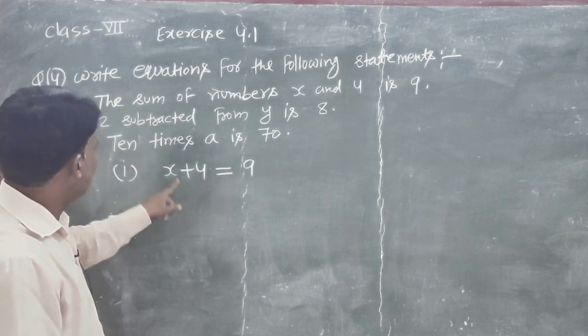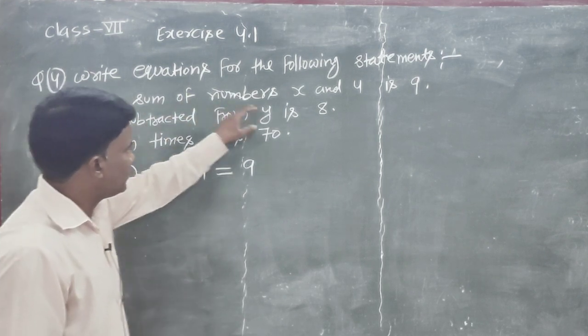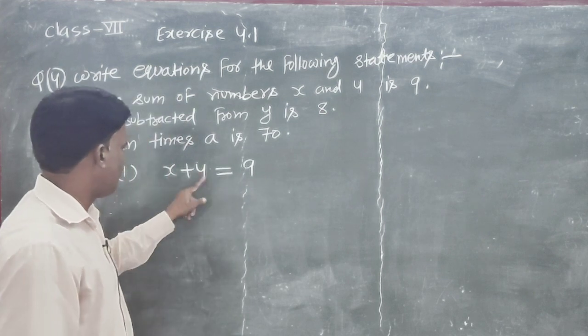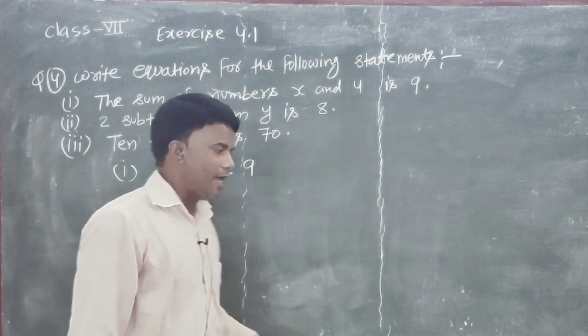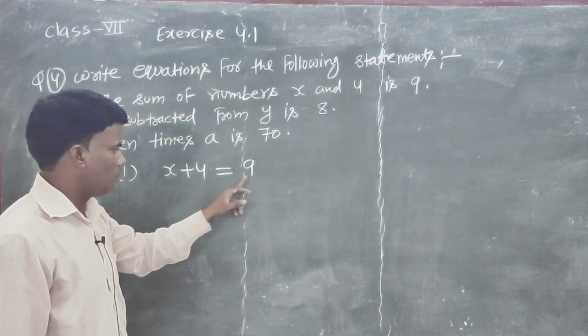Okay? Today again, the sum of numbers x and 4. x and 4 percent are plus. Some come up here, plus. So result reality is 9. x plus 4 is equal to 9.